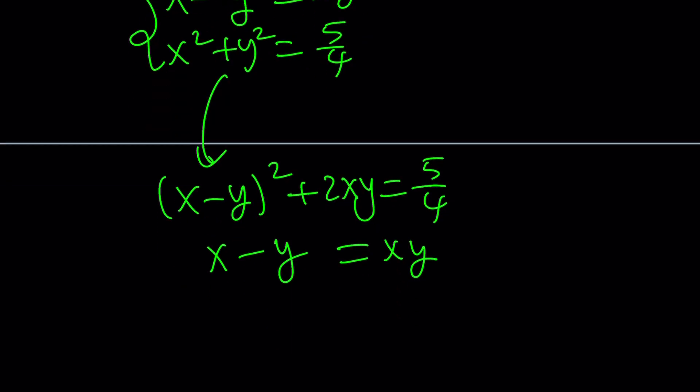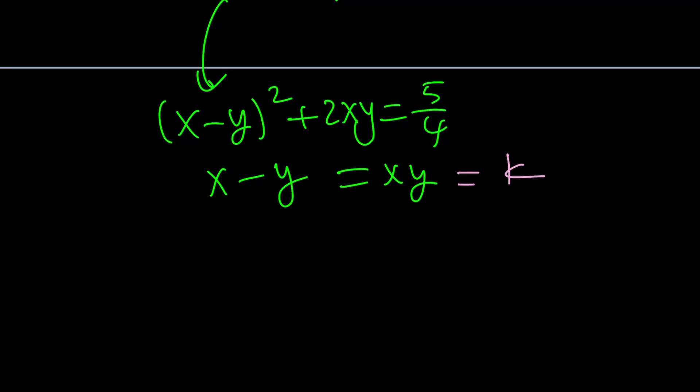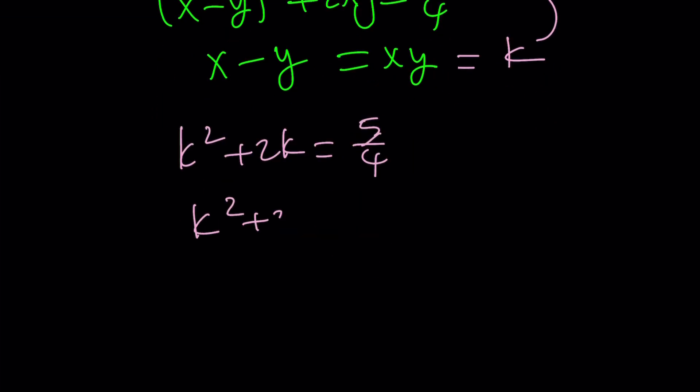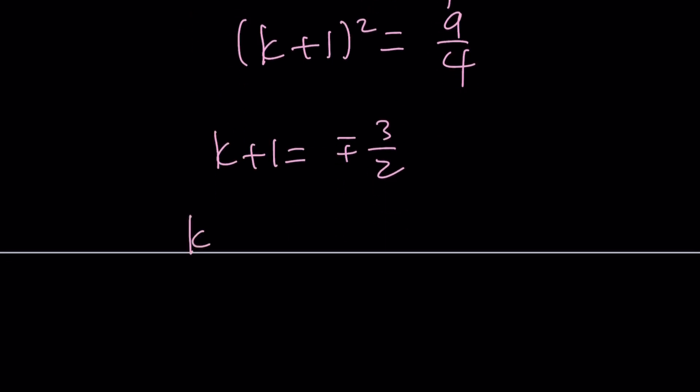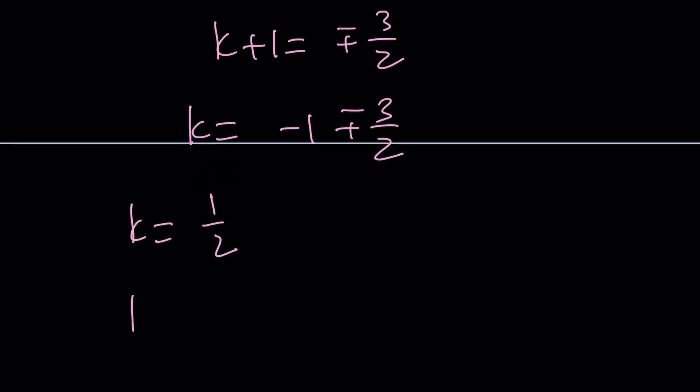We can use substitution. Let's go ahead and call this something. How about k? So we get the following. If you substitute that into the first equation, you get k squared plus 2k is equal to 5 fourths. And if you add 1 to both sides, you get k squared plus 2k plus 1 is equal to 9 fourths. Notice that the left-hand side is a perfect square. And now you can use completing the square method and square root both sides. You're going to get two solutions. This should be easy if you're doing algebra or if you've done it. This is going to be plus minus 3 halves. And from here, k is going to be negative 1 plus minus 3 halves, giving us k equals negative 1 plus 3 halves, which is 1 half, and k equals negative 1 minus 3 halves, which is negative 5 halves.